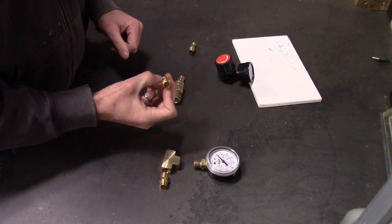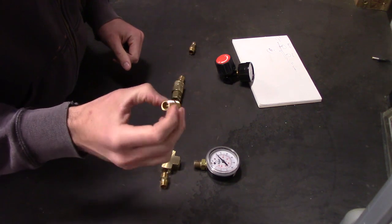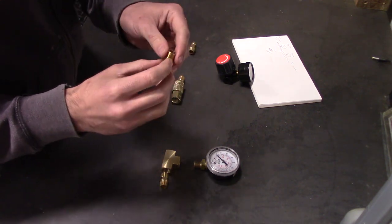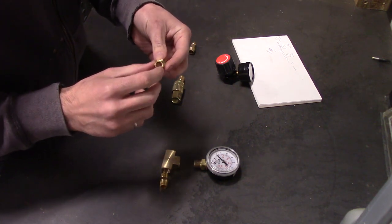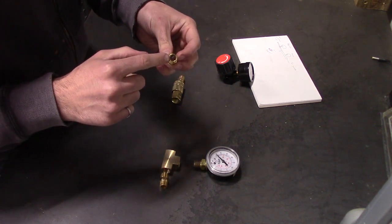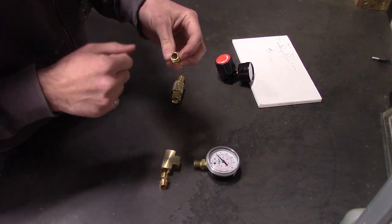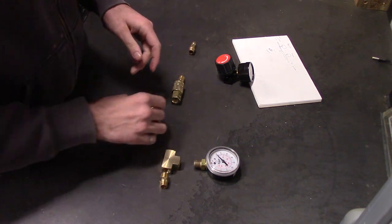This right here is just a brass union. You can see it straight through. Essentially what we're going to do, this is what we're going to use to create that orifice I was talking about. So I think what we're going to do is we're going to fill this up with epoxy. And then we're just going to drill a little hole right through this, and that'll be our orifice.